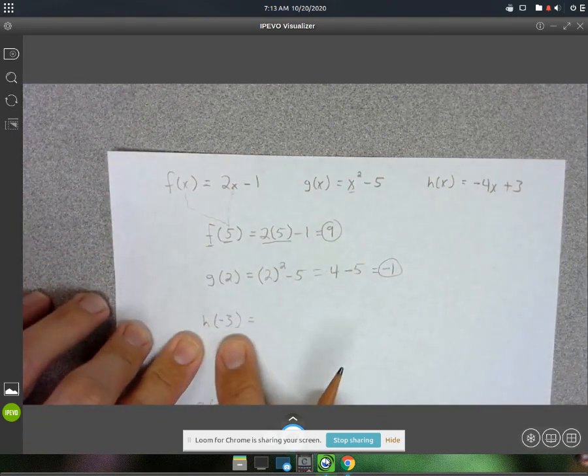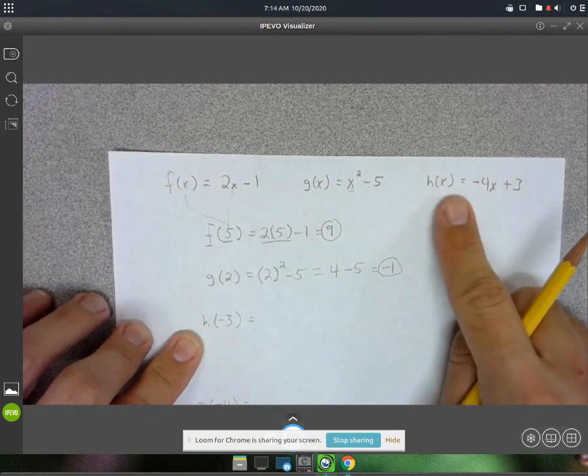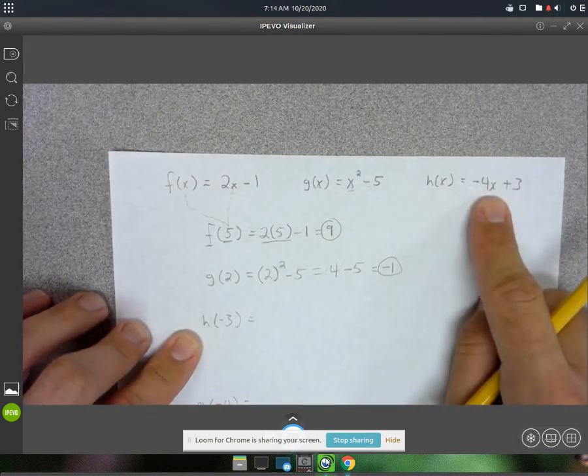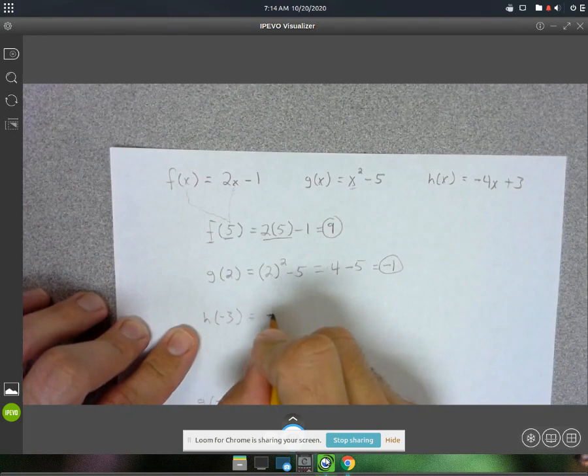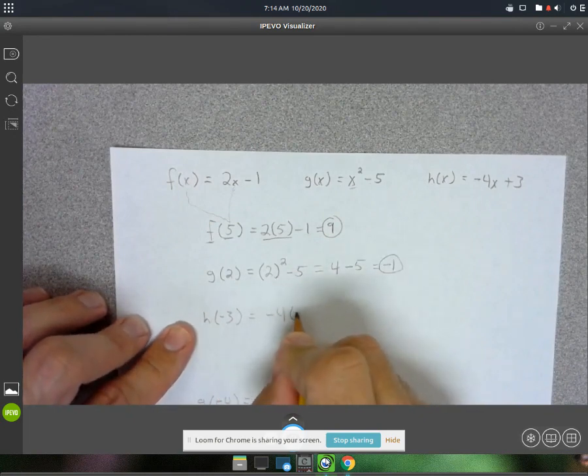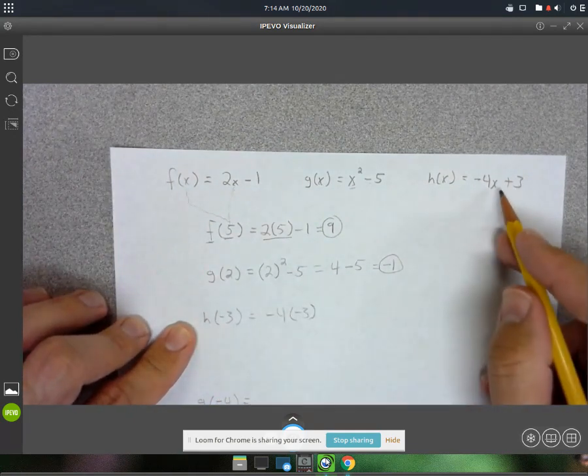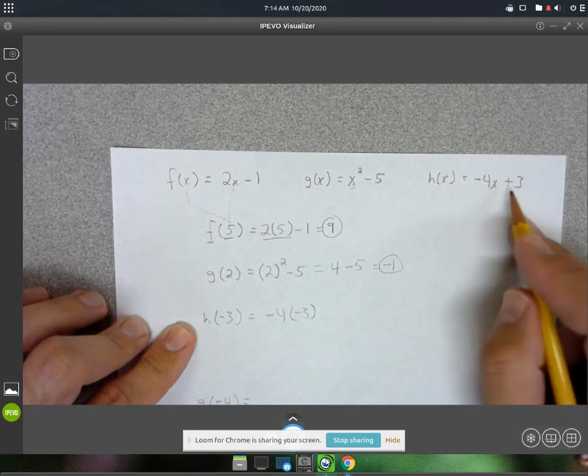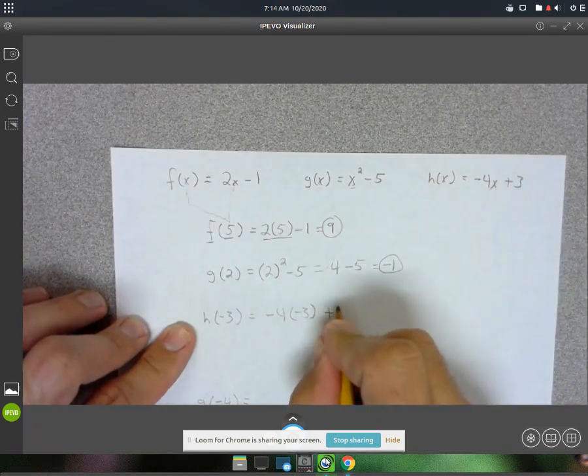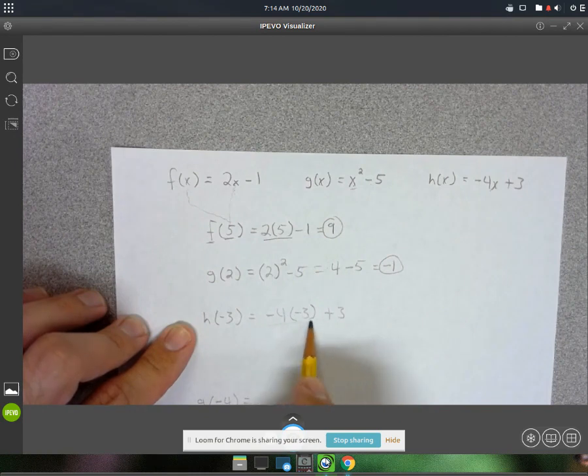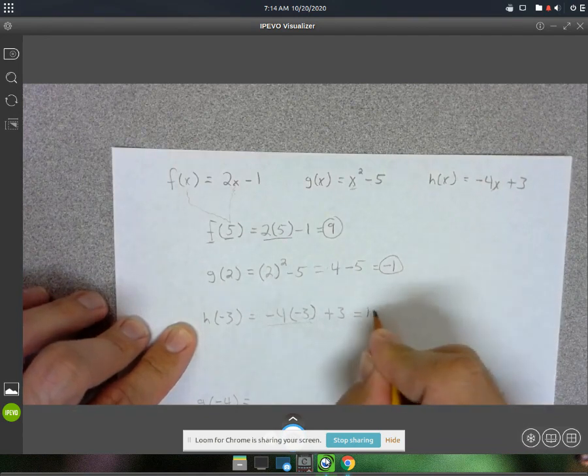Alright, h of negative 3. So we'll go to the h function, and plug in negative 3 for x. So we've got negative 4, and then we're replacing the x with a negative 3, and then plus 3. Alright, so negative 4 times negative 3, that is 12. And then 12 plus 3, 15.